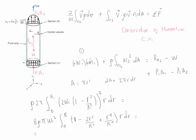We continue: 4 rho pi W1 squared and this becomes r minus 2r cubed over R squared plus r to the 5th over R to the 4th dr.